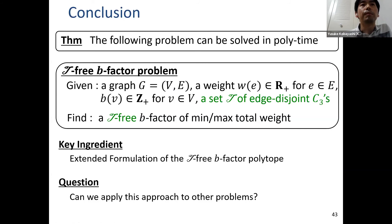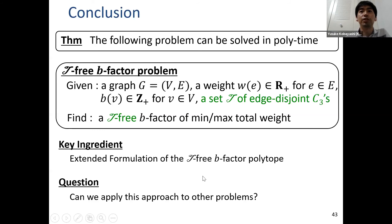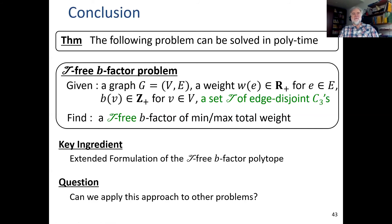In conclusion, our main result is that the T-3-b-factor problem can be solved in polynomial time. The key ingredient is an extended formulation of the T-3-b-factor polytope with exponentially many inequalities, combined with the ellipsoid method. Using an extended formulation with exponentially many inequalities may be an interesting new technique for optimization problems, and a natural open question is whether this approach applies to other problems.